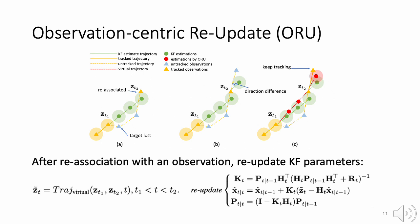We propose ORU to re-update the Kalman filter parameters at T2 so that OC-SORT can keep tracking the target after T2, as shown in figure C.